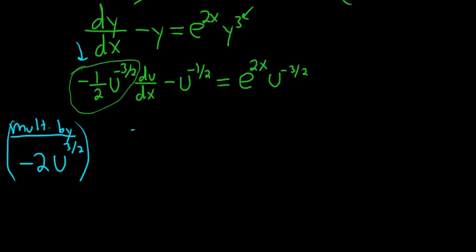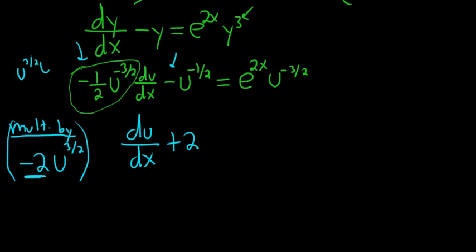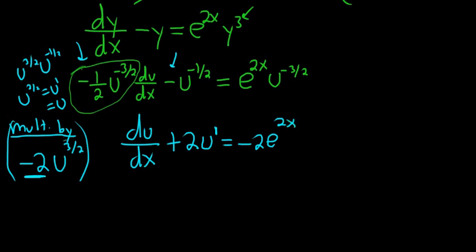After multiplying: there's a negative sign already so negative two times negative gives plus two. For the middle term: u to the three-halves times u to the negative one-half adds to u to the two-halves, which is just u. It's really important that you get u there — it guarantees this is a linear DE. On the right-hand side, negative 2 · e^(2x), and u to the three-halves times u to the negative three-halves cancels. So we get: du/dx plus 2u equals negative 2·e^(2x).